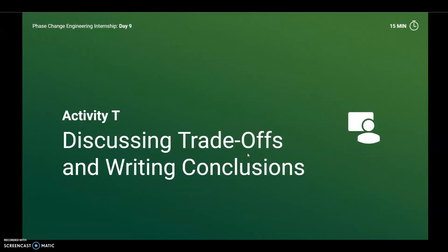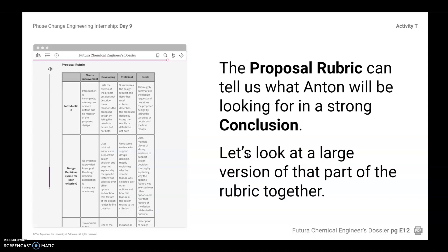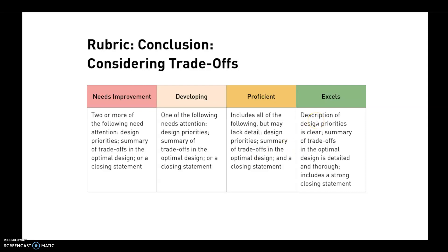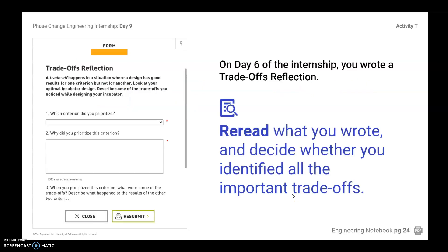Welcome back. Now we're going to discuss tradeoffs and writing a conclusion. In the conclusion, you're going to wrap up the entire proposal by demonstrating that you understand the tradeoffs among the criteria. Let's look at that rubric again and look specifically at the conclusion section. Description of design priorities is clear. Summary of tradeoffs in the optimal design is detailed and thorough and includes a strong closing statement. What might make the summary of tradeoffs clear and detailed? Adding more than one example of the tradeoffs and using specific details about your results that you recorded. On Day 6 of the internship, you wrote about tradeoffs in your reflection. Reread what you wrote and decide whether you identified the important tradeoffs that you want to address.